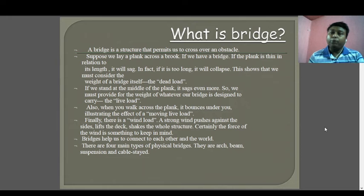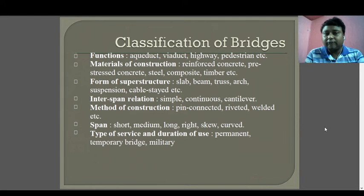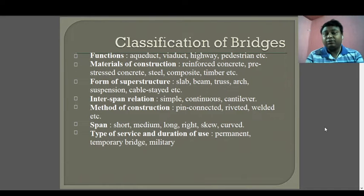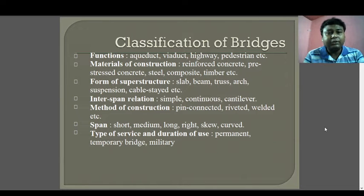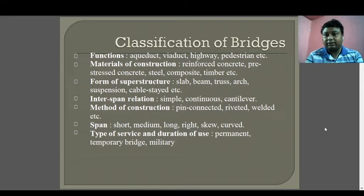The classification of bridges is divided based on various parameters. First, based on function: aqueduct, viaduct, highway, pedestrian, etc. Second, based on construction materials: reinforced concrete, prestressed concrete, steel, composite, timber. If you have visited Sikkim, there are glass bridges there, so glass is another type of construction material.